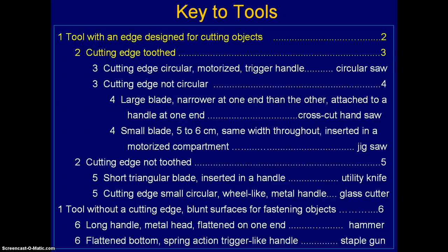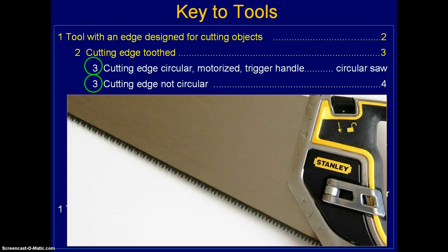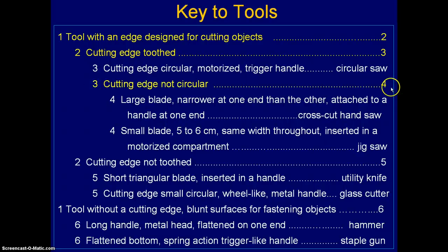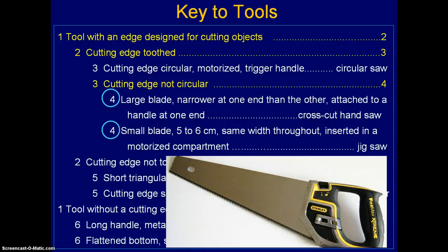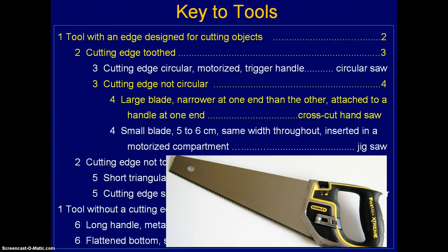Choosing 'cutting edge toothed' tells you to go to number three, and there are going to be two choices on the left-hand side. The next choice is: is the cutting edge circular and motorized, or is the cutting edge not circular? Looking at it, that doesn't look circular — it looks pretty straight — so you choose 'not circular,' which takes you to number four. Now the two choices for number four: is it a large blade narrower at one end than the other attached to a handle, or is it a small blade with the same width throughout inserted into a motorized compartment? This blade is narrower at one end and has a handle, so you eliminate the other choice and identify it as a crosscut handsaw — and you can't go any further, so you're done.